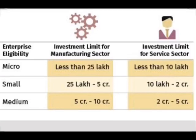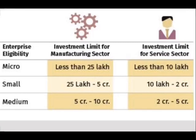Under the Karve Committee, small scale industries are those which have investment up to rupees 5 crore. Units with investment up to 10 lakh will be considered micro industries. Small industries have investment from 10 lakh to 2 crore in the service sector, and medium industries have investment from 2 to 5 crore in the service sector.